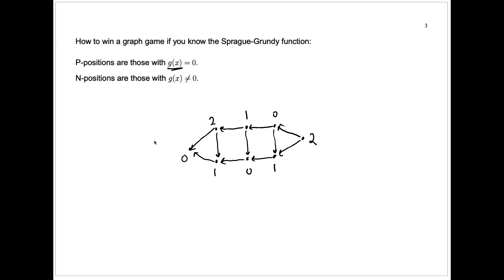So I put in that graph game we had before, and we can just see very easily. Let's say we start here on the right side. That has Sprague-Grundy number of two. So what is that? That's an n position.